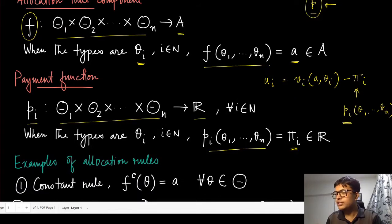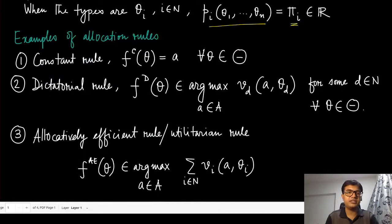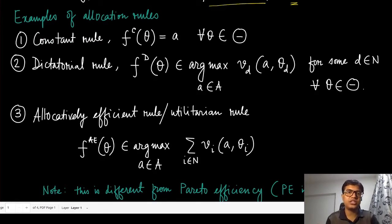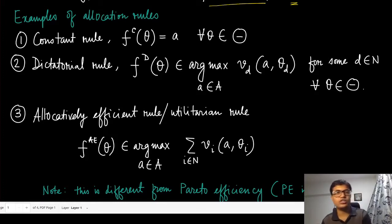Let us look at some allocation rules to understand what they mean. One very straightforward, though not very interesting, allocation rule is the constant allocation rule: no matter what the agents report, you choose a fixed allocation a, completely ignoring the types of the agents.